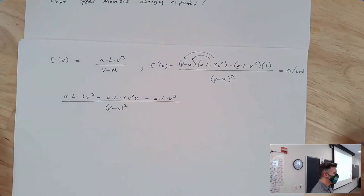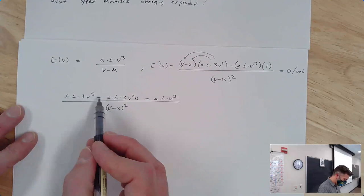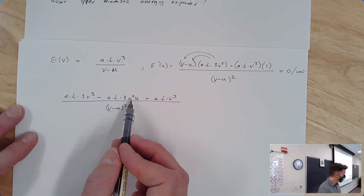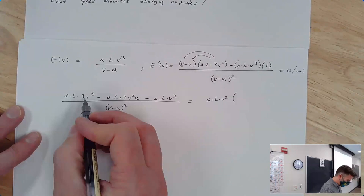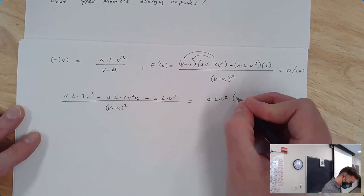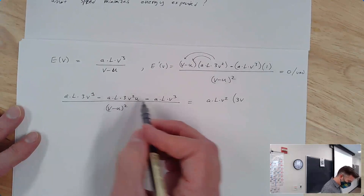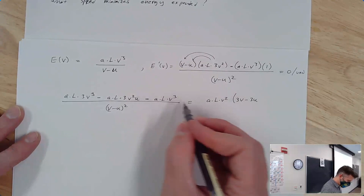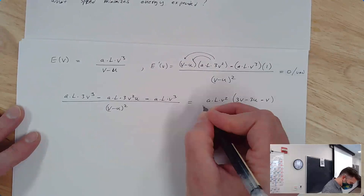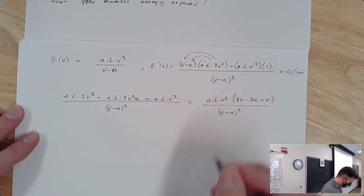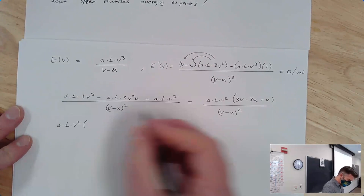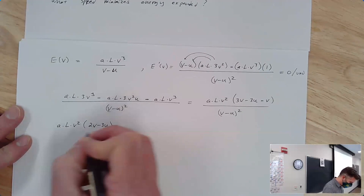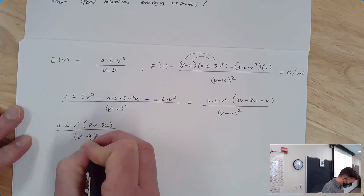We can factor out A times L and V squared from the numerator, leaving 3V minus 3U minus V, all over V minus U squared. Simplifying, we get A times L times V squared times 2V minus 3U, all over V minus U squared.